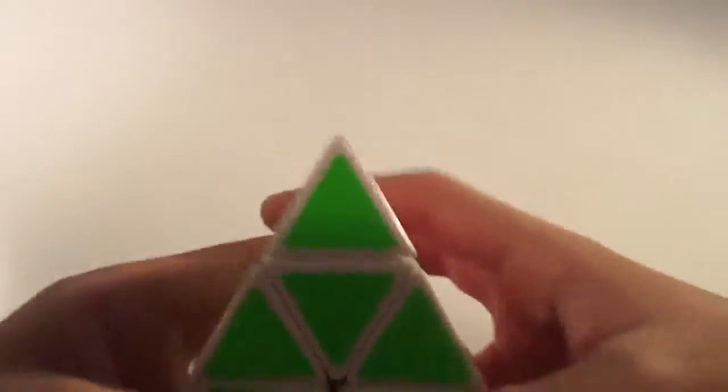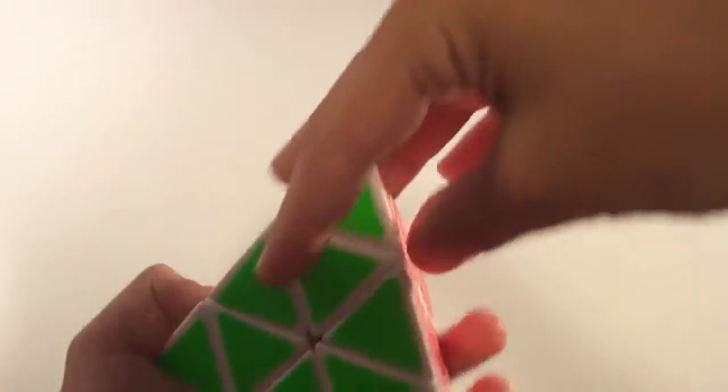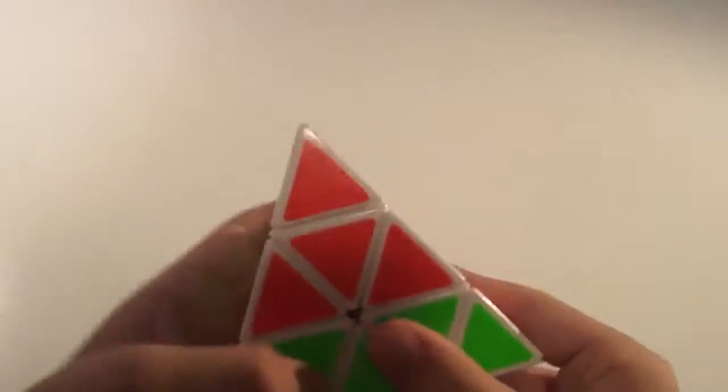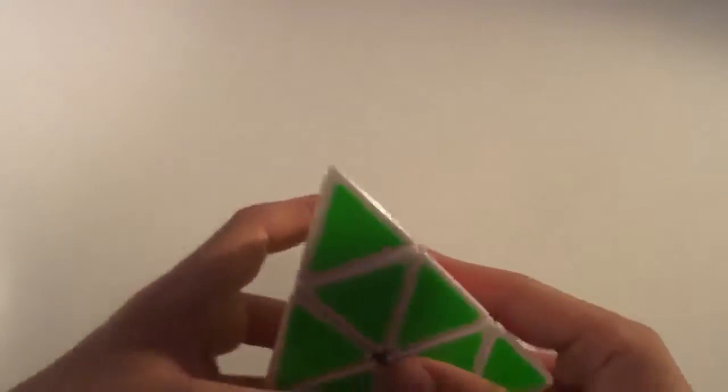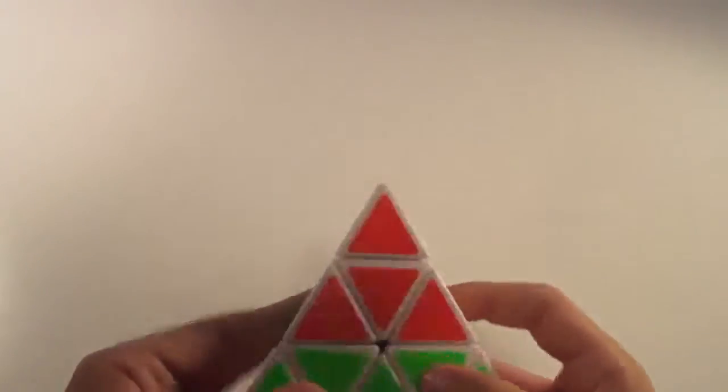Now U would be this part, right? And U would mean to move the top side clockwise. U would be like that. And then U prime, U with an apostrophe after it, would mean to move the top side like that, counterclockwise. U prime. U, U prime.